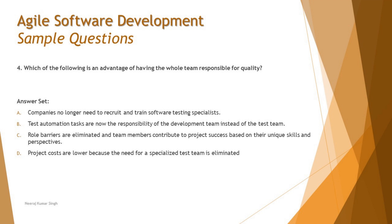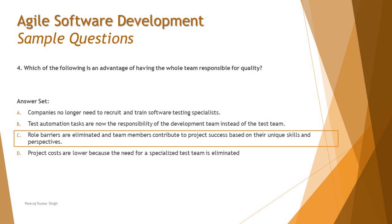Option C says 'the role barriers are eliminated and team members contribute to project success based on their unique skills and perspectives' — this is what we are looking for in a team combining architects, developers, and testers. Option D says 'project costs are lower because the need for a specialized test team is eliminated' — we don't eliminate the test team just because quality is everyone's responsibility. So the right answer is C.